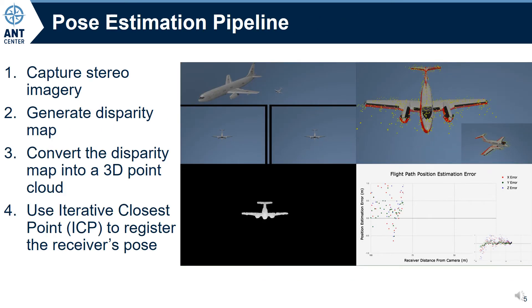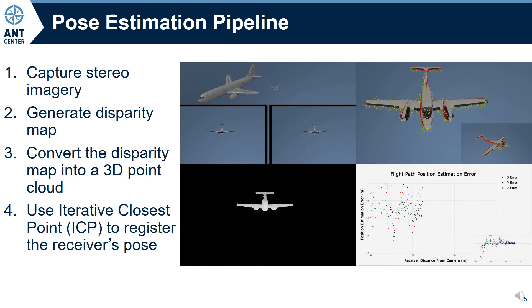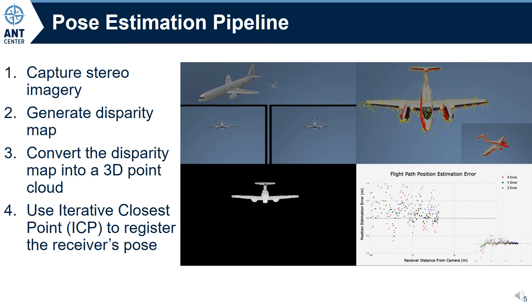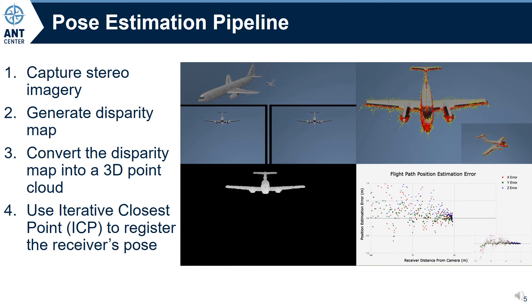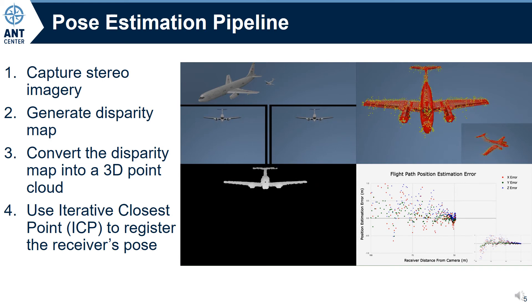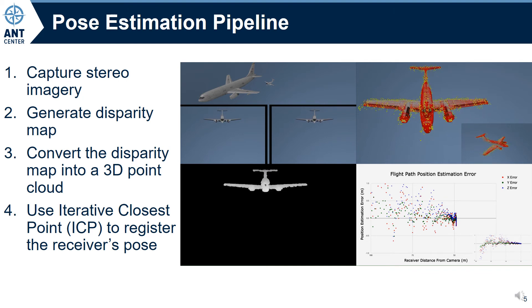To estimate the receiver's pose using a pre-calibrated stereo camera system, we use the following pipeline. First, we capture a stereo image pair where the stereo camera system is viewing the receiver. Next, we use the stereo block matching algorithm to generate a disparity map. The disparity map gives us information on the depth of each pixel from the stereo camera system. We convert the disparity map into a 3D point cloud by re-projecting the depth map into 3D space. Once we have a 3D point cloud, we use the iterative closest point algorithm, or ICP, to register the receiver's pose.